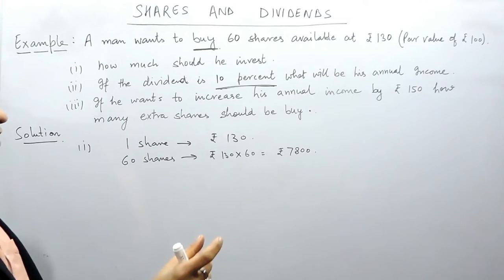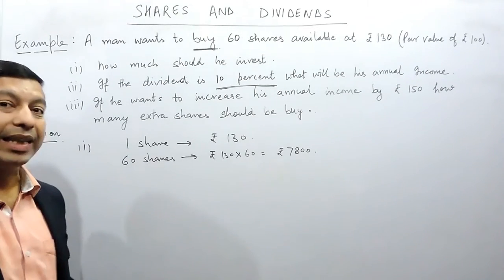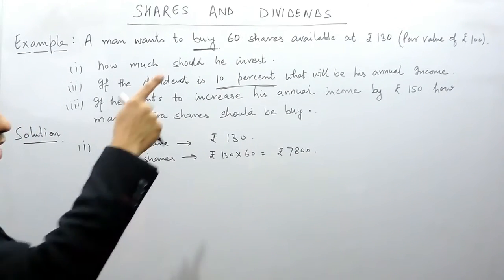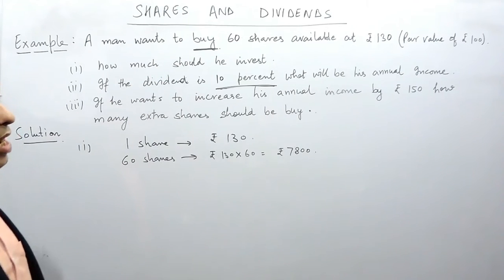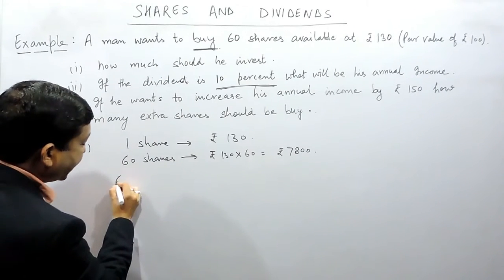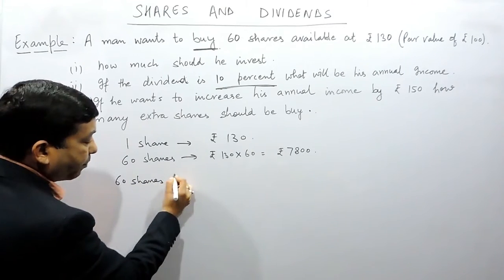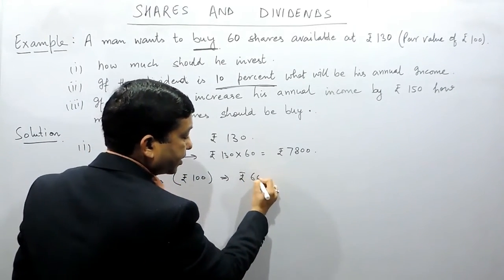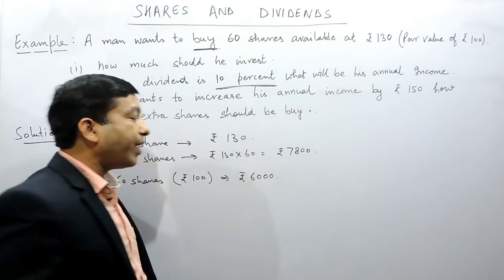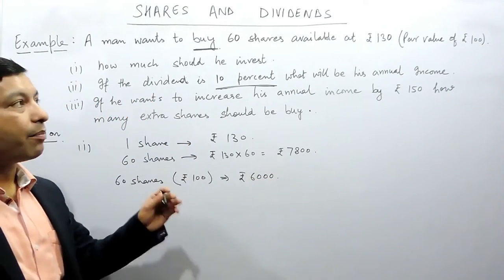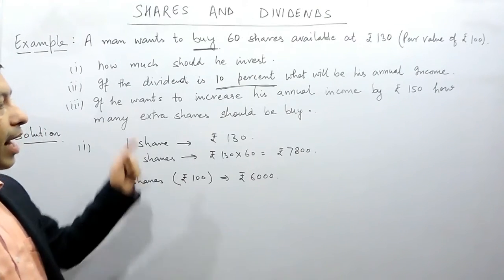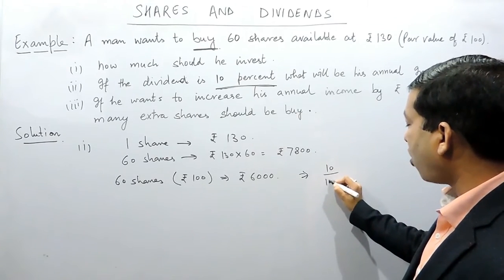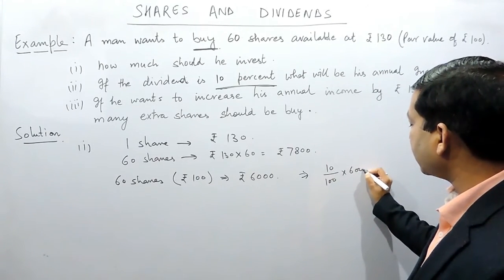Whatever you have invested in the company, the company will provide 10% of that amount. As the share is of par value 100, so 60 shares at par value of rupees 100 will amount to rupees 6000. Or we can say that initially somebody has invested rupees 6000 in the company and the company is paying 10% dividend.